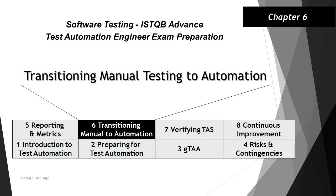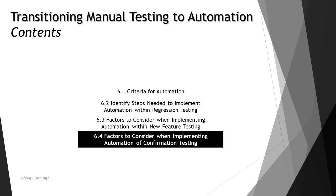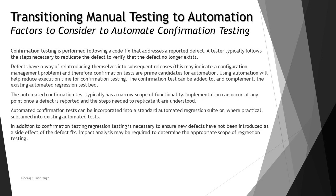Hello everyone and greetings for the day. Welcome back to the tutorial on ISTQB Advanced Test Automation Engineer. We are in chapter 6 and looking at the last topic of this chapter, which is 6.4: factors to consider when implementing automation of confirmation testing. In the previous tutorial we have understood a lot about regression testing and also about new feature testing.